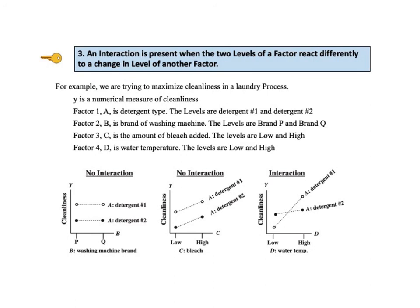Right diagram. On the other hand, cross lines, as shown in the right diagram, do indicate an interaction. One level, detergent number 1 of factor A, detergent type, reacts significantly stronger than the other level to a level change in factor D, which is water temperature. There is an interaction. When the lines are crossed at substantially different angles, as in this diagram, the effect of the interaction is likely to be statistically significant. If the lines cross but are close to parallel, the interaction may not be statistically significant, and statistical software will tell us for sure which is the case.